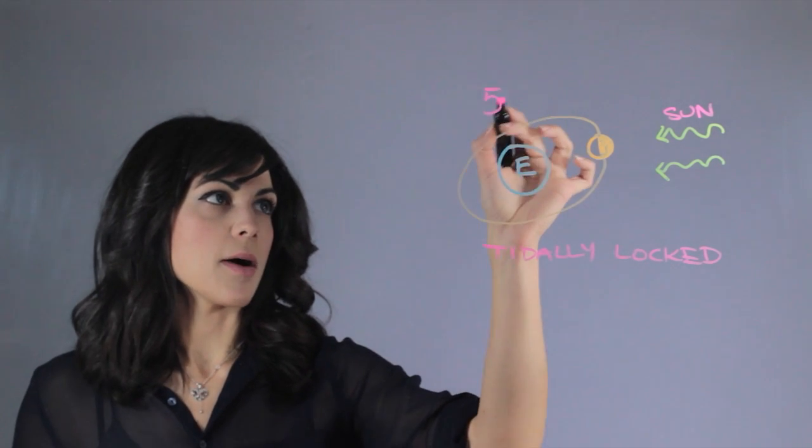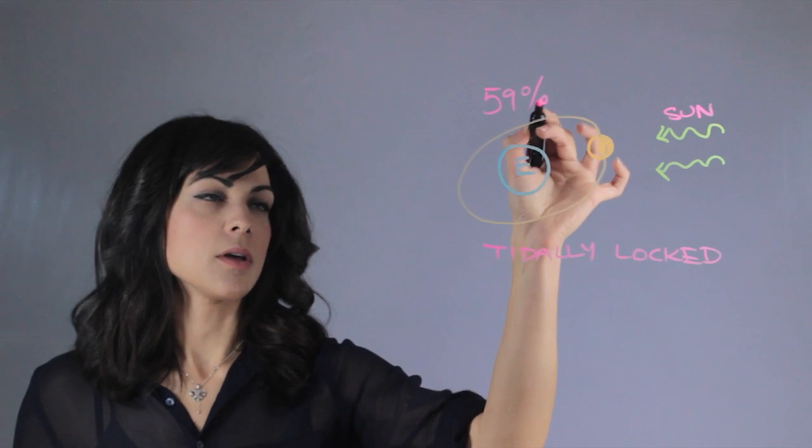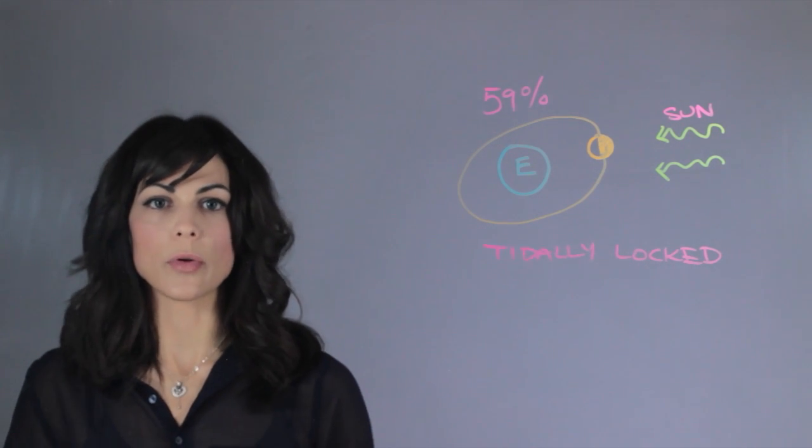So we actually see about 59% of the moon and that's due to the eccentricity of the orbit.